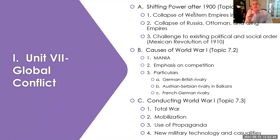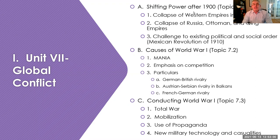In China, we see the revolution of 1911 ending the dynastic cycle of governments and bringing in a republic with the revolution against the Qing. That was led by Dr. Sun Yat-sen and the Nationalist Party called the Kuomintang Party. We also see another challenge to the existing political and social order in the Mexican revolution of 1910.